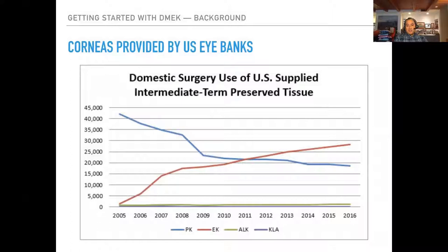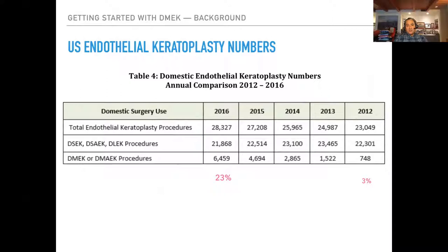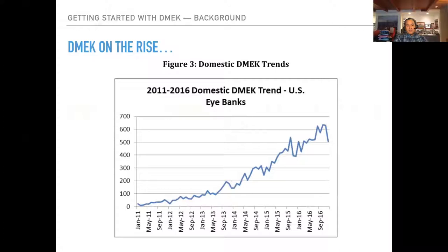Here's a chart showing what's happened in the US over the last decade. In 2011, endothelial keratoplasty surpassed penetrating keratoplasty as the predominant corneal procedure in the US. We do about 40 to 50,000 grafts a year, and the majority are done by endothelial keratoplasty — both DMEK and DSAEK. Only 3% of endothelial keratoplasties were DMEK in 2012; two years ago it was 23%, and I'd say it's closer to 30% now.